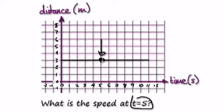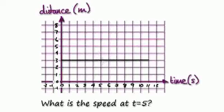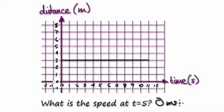The gradient here represents the speed. The gradient here is 0 — the steepness of this section is 0. So the speed here is 0 meters per second.